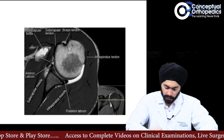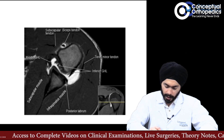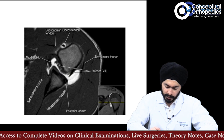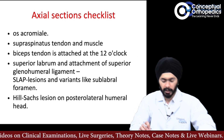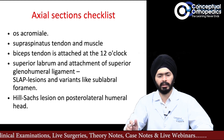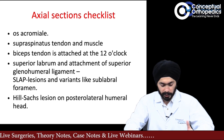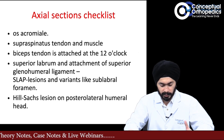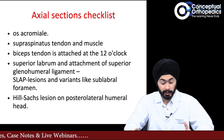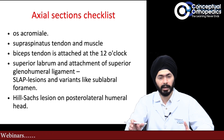Going further down, you can see good anterior and posterior labrum, and the biceps tendon — you may also see some edema around the biceps tendon. The axial section checklist includes: os acromiale, the rotator cuff, the supraspinatus and infraspinatus, the biceps tendon in the bicipital groove, and whether the biceps tendon is dislocated out of the groove.